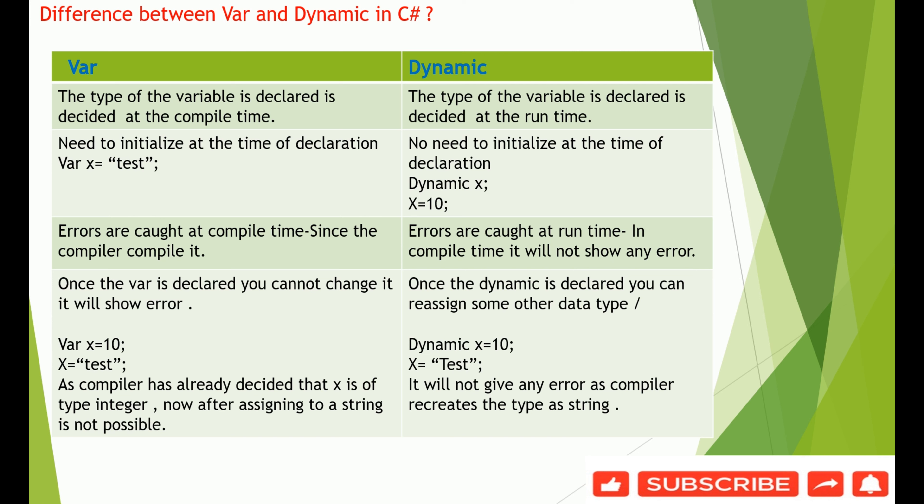Errors are caught at compile time in the case of var. But in the case of dynamic, the type of the variable is decided at runtime.